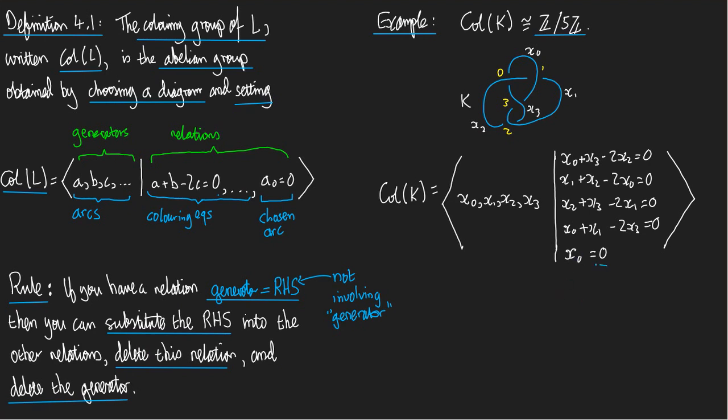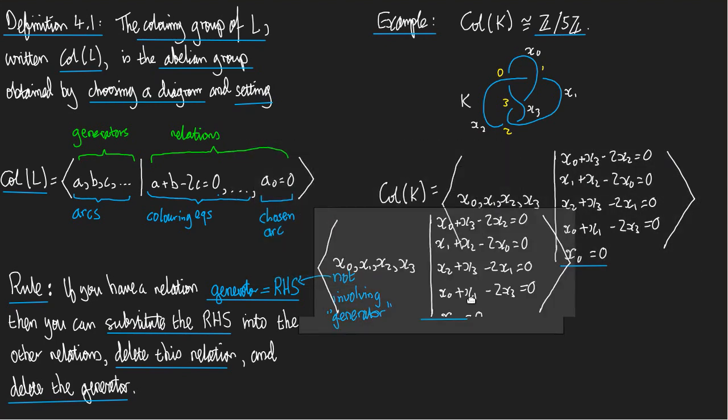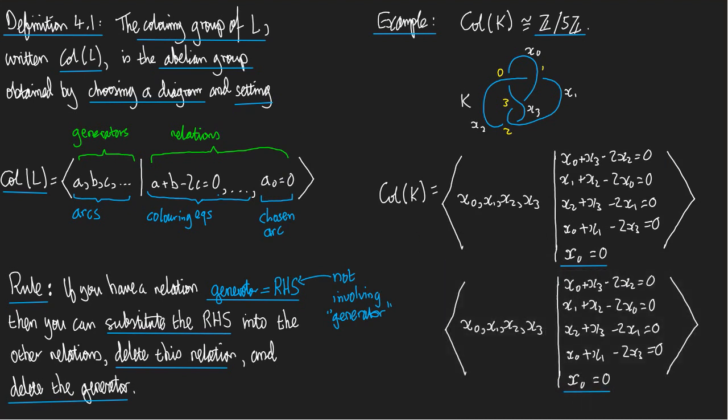So can we do that on the right-hand side? Well, yeah. Let's look at this relation here. It's of the form some generator x0 equals some right-hand side, in this case 0. So what we can do is, we can substitute this expression into all the other relations, and then we can erase the given relation, and we can erase x0. So let me show you what happens if I do that. So what I'm going to do is, I'm going to substitute x0 equals 0 into all the other relations. Well, what does that mean? That means erase x0 whenever I see it. Then I can delete this relation, and then I can delete the generator. There we go. And there we've made a simpler set of equations.